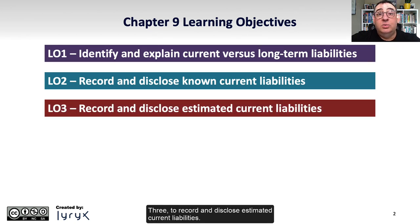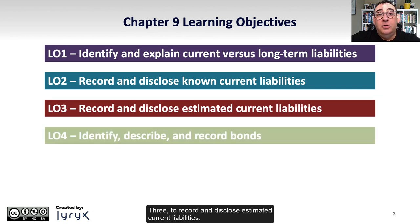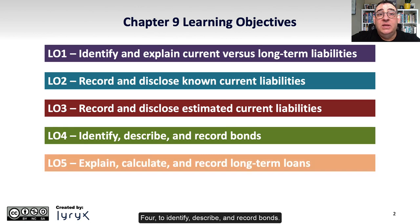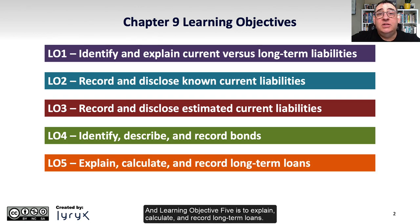Learning Objective 3 is to record and disclose estimated current liabilities. Learning Objective 4 is to identify, describe, and record bonds. And Learning Objective 5 is to explain, calculate, and record long-term loans.